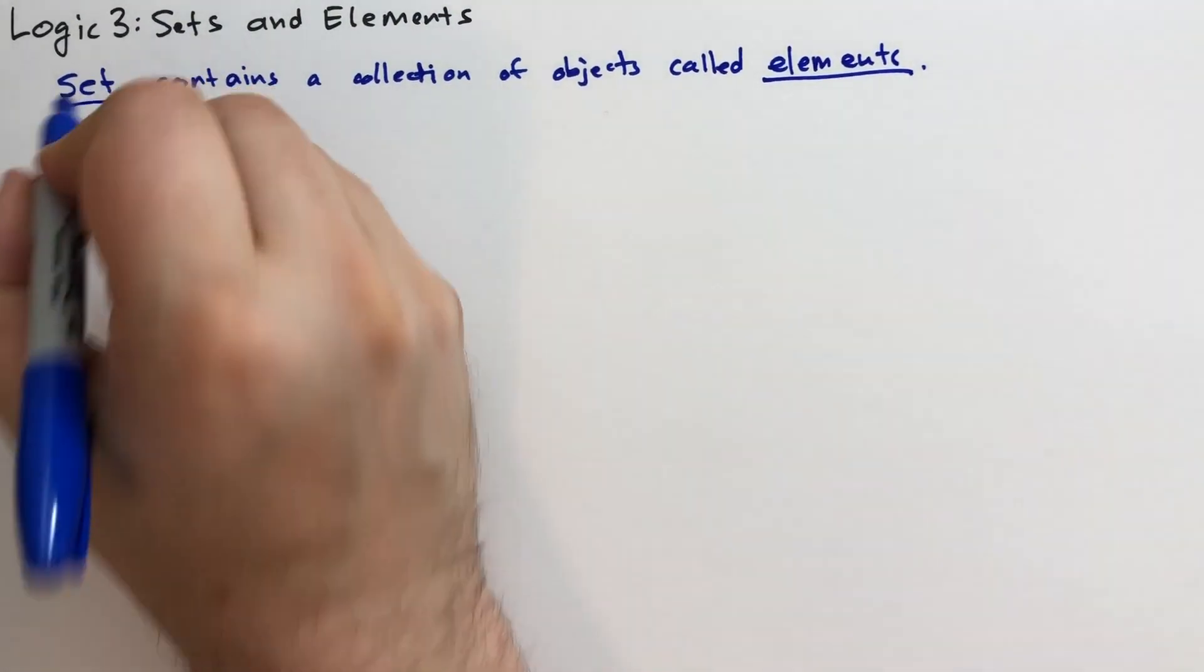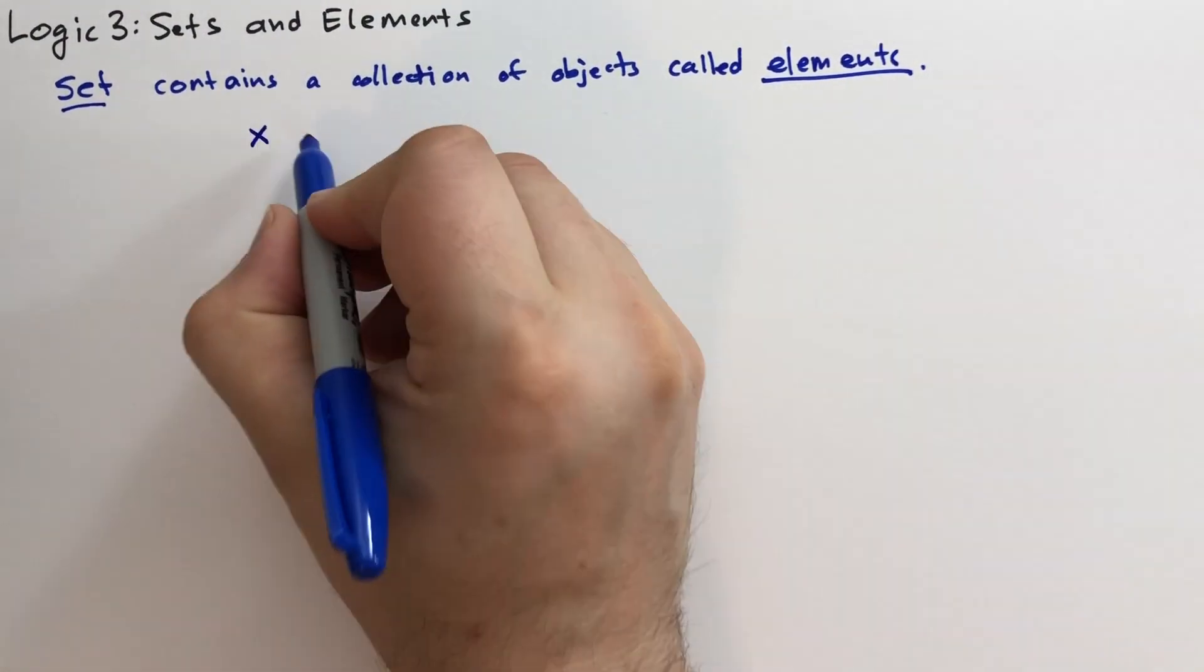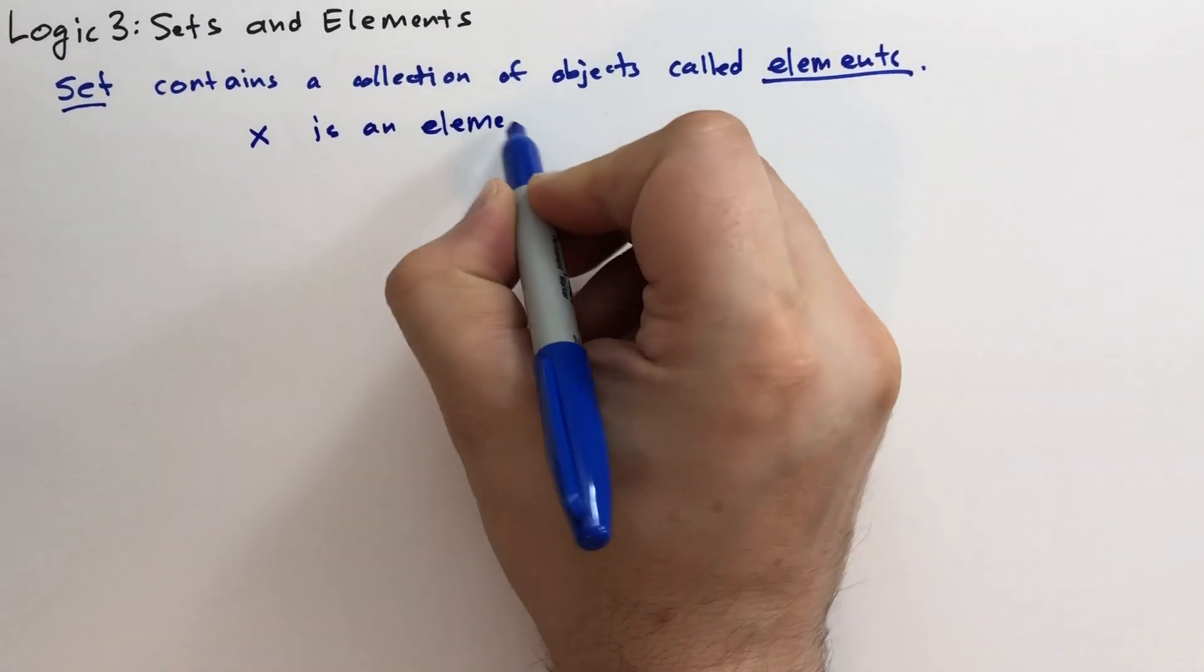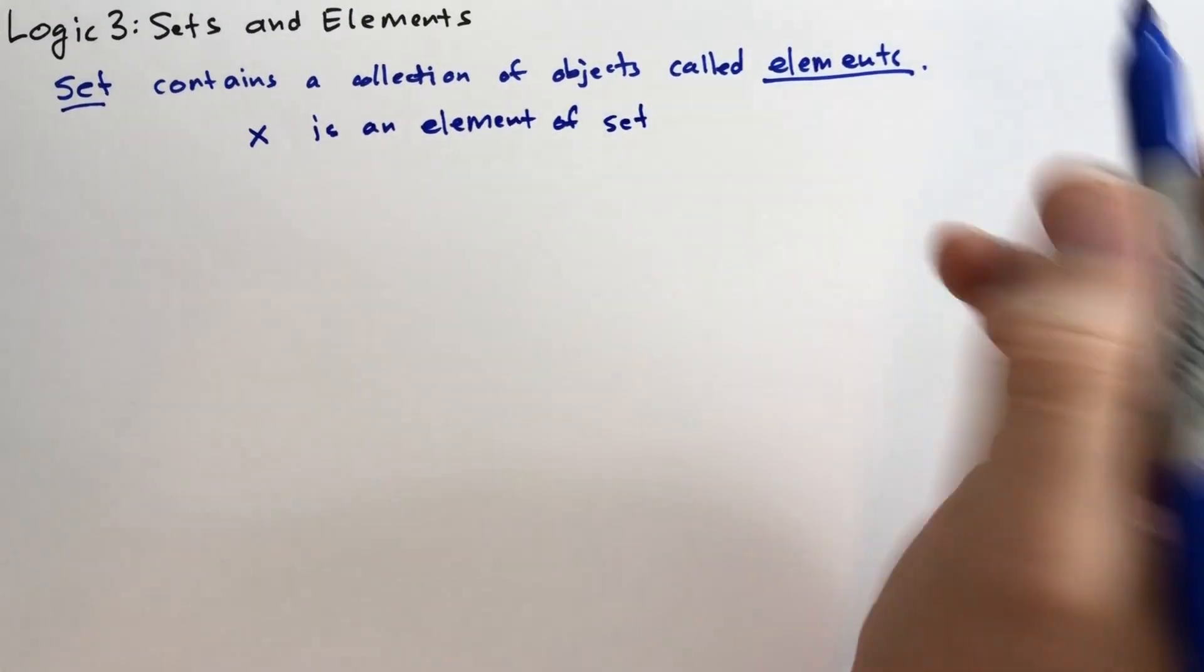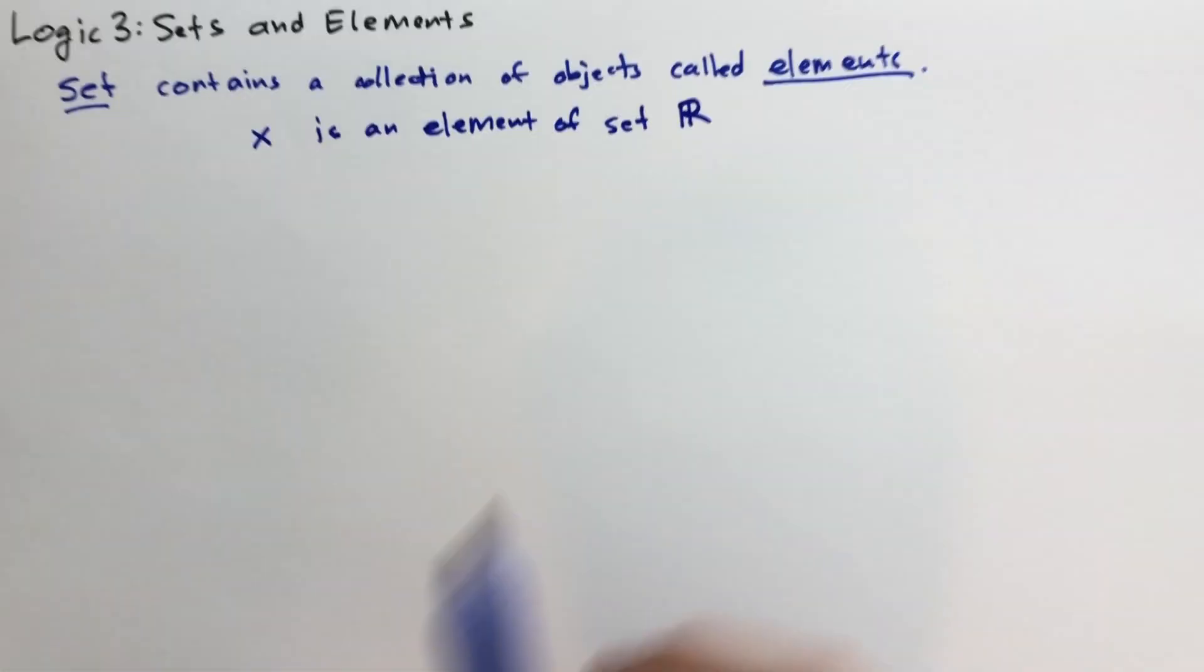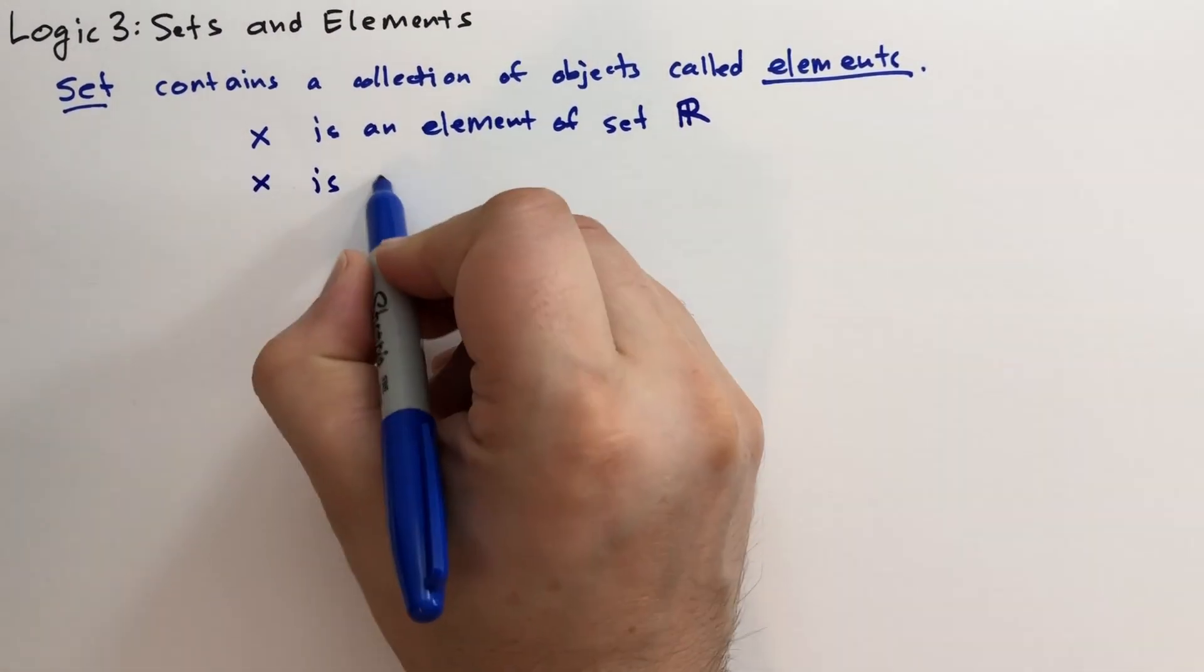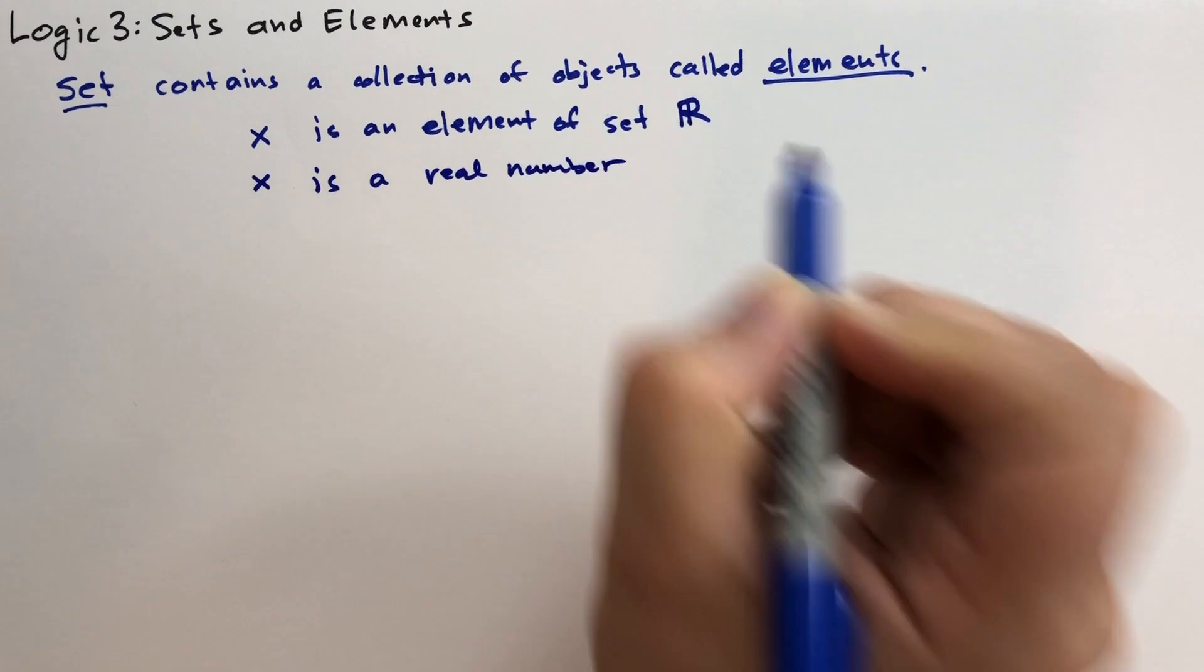So the two important words to learn are set and element. So if we say X is an element of set R, we know what R is. So I'm going to use a fancy R there. Then that means, set R being the set of all real numbers, we say it's the same as saying X is a real number.